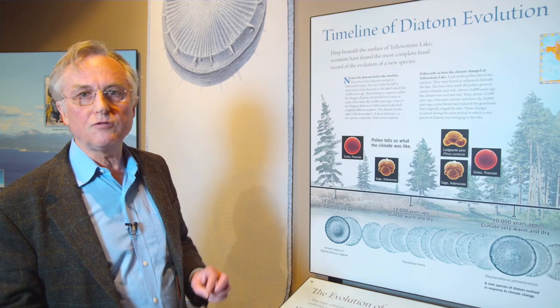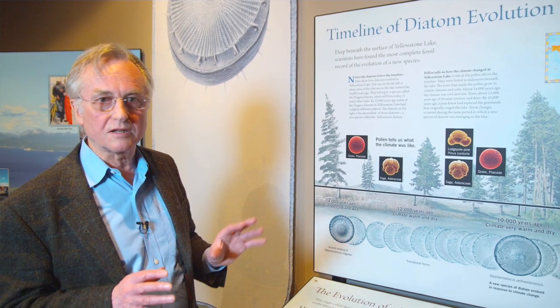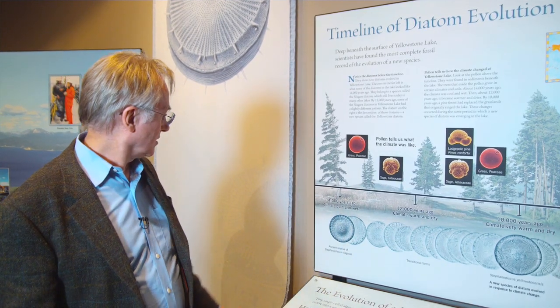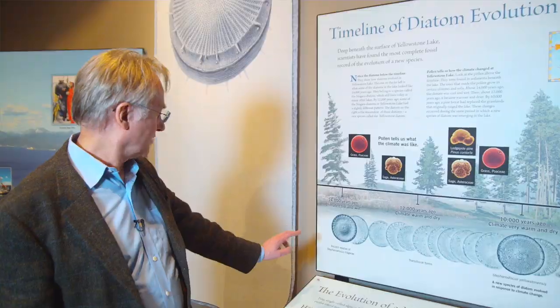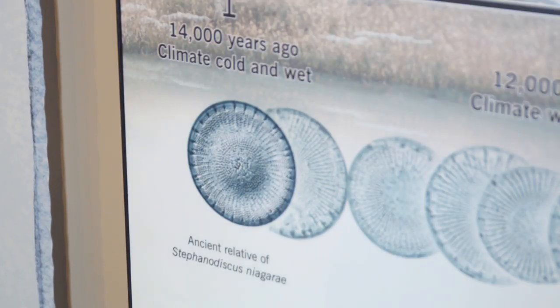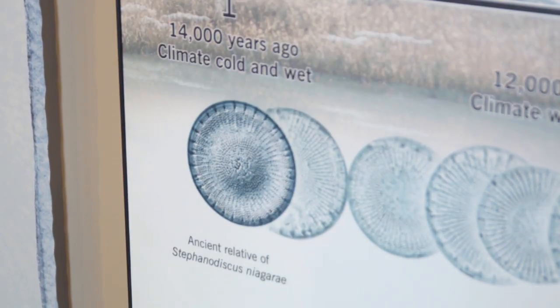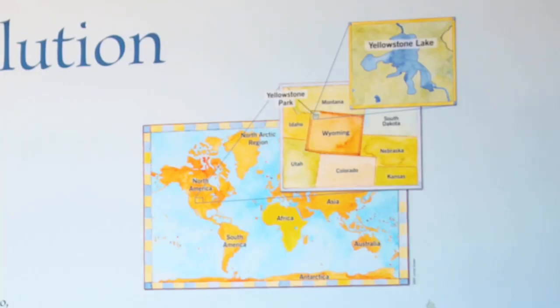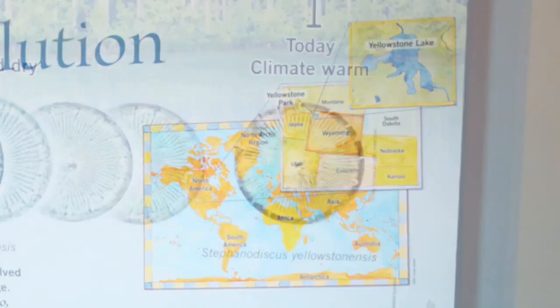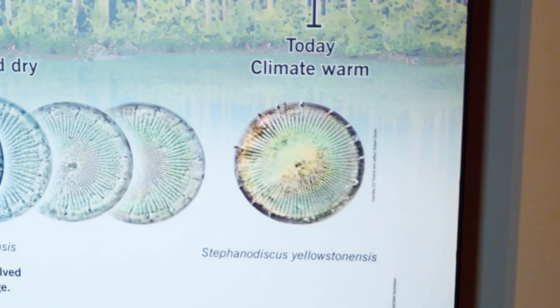If you look in ponds widespread over the United States, you'll find a diatom called Stephanodiscus niagara. It's very, very common. If you look in Yellowstone Lake, you'll find a unique species which is only found there, Stephanodiscus yellowstoneensis.